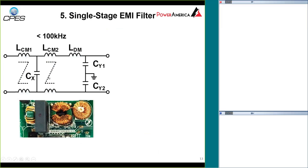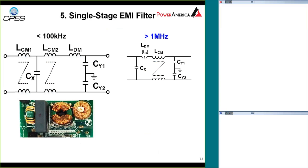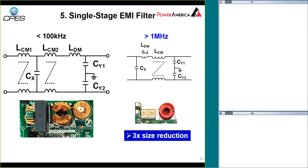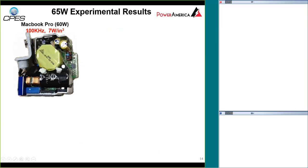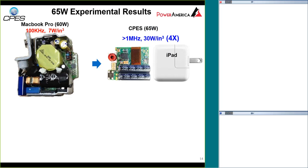Therefore, the complicated EMI filter can be simplified into a single stage filter. With all this, we can make the filter size reduction by a factor of three. As a result, we are able to reach our target with a 4X reduction in size.